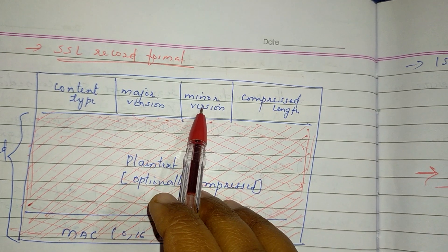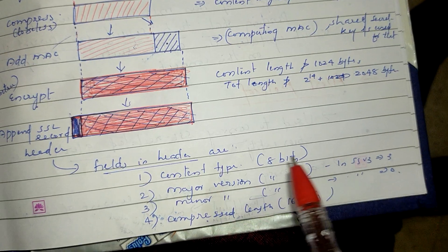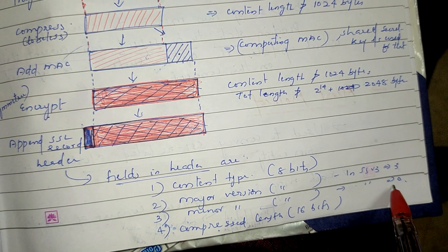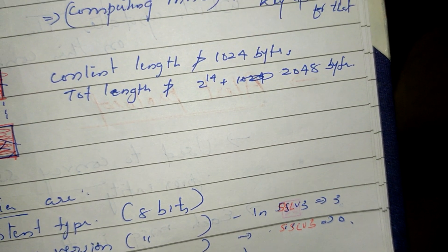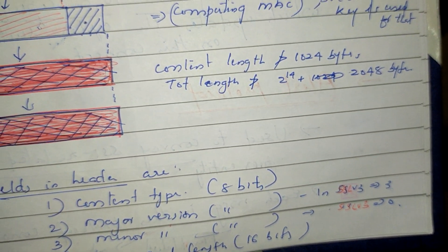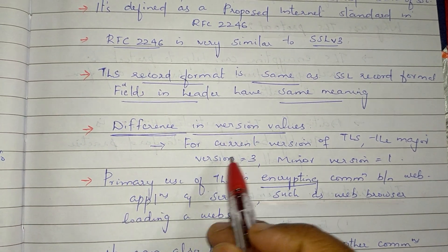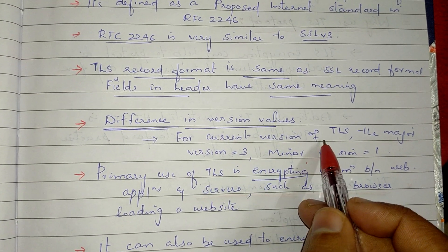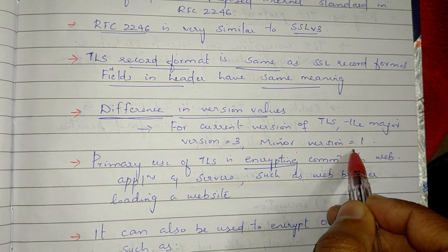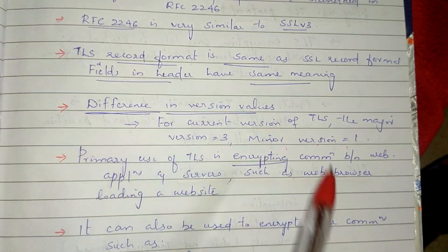For SSL version 3, the major version is 3 and minor version is 0. For TLS, the current version has major version 3 and minor version 1. That is the difference in the record format header field version values.